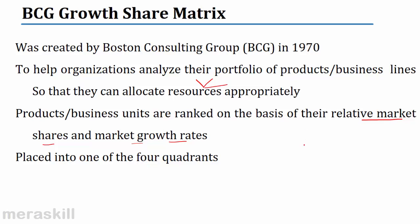The products and business units are ranked on the basis of their relative market share and the market growth rates and placed into one of four quadrants. They drew a horizontal axis representing the market share, which goes from high to low. Then there is a vertical axis creating four quadrants, and this vertical axis represents the market growth rate.